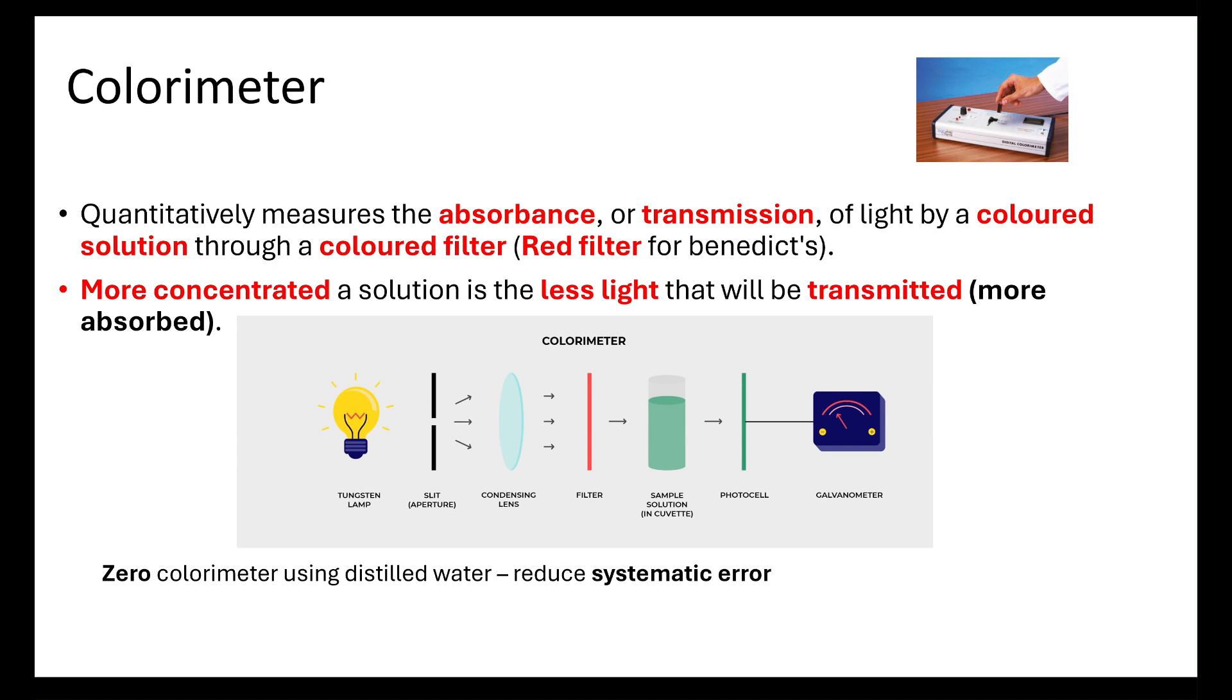There are a few things to note when doing a colorimeter test. We need to zero the colorimeter using distilled water to begin with. That is going to reduce our systematic error. The more decimal points we get with regards to our reading of transmission or absorbance, the increased resolution we have. We always want to repeat and calculate the mean. This is going to reduce our random error, our uncertainty in our data.